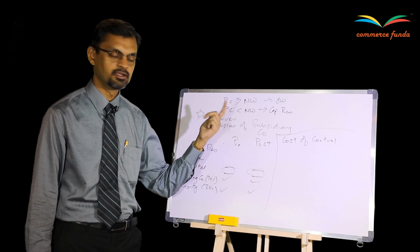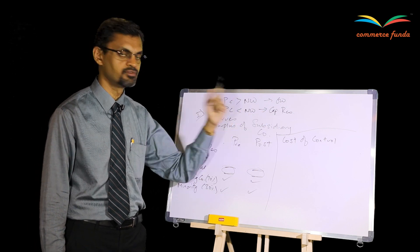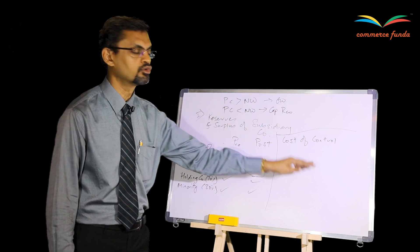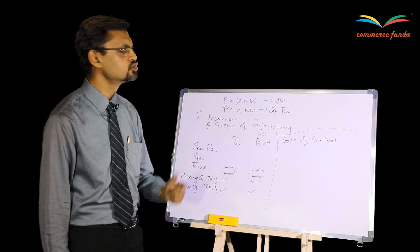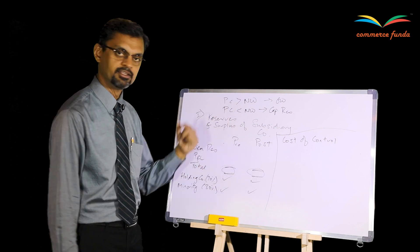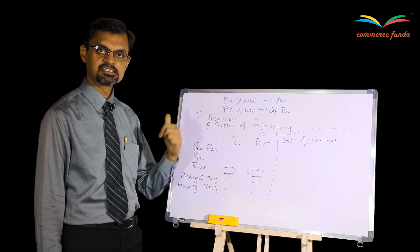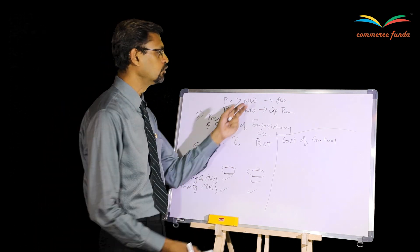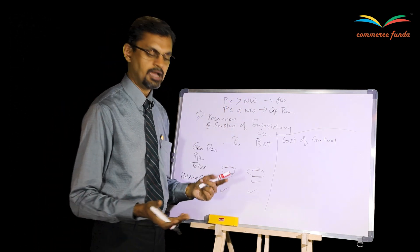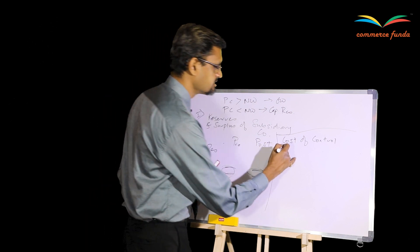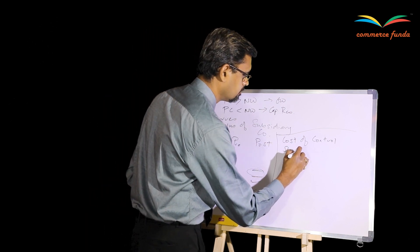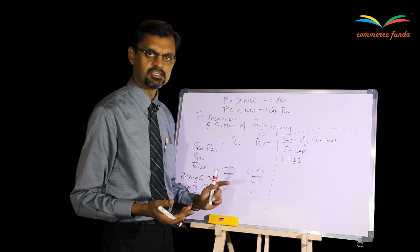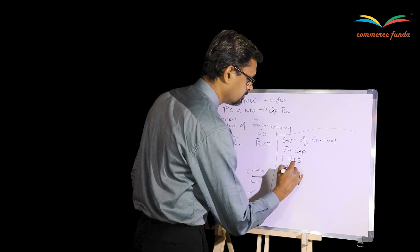When payment made is lesser than what is acquired, it is a clear case of profit — and that profit is capital profit, which is why it is called capital reserve. In the second working note, you calculate net worth and compare it against the purchase consideration. The difference is either goodwill or capital reserve. Net worth is shareholders' funds: share capital plus reserves and surplus.